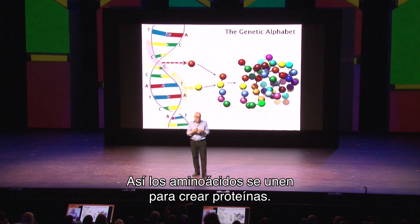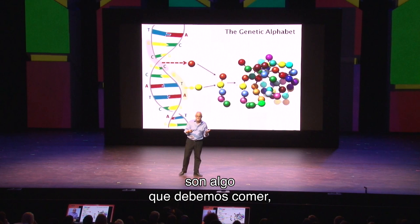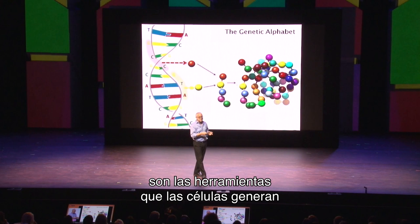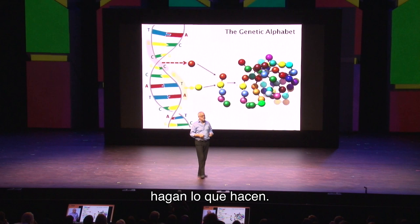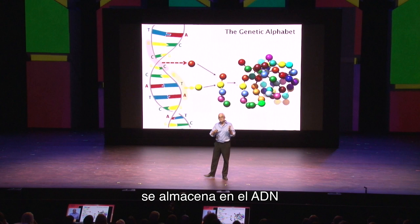In that way, those amino acids can be strung together to make proteins. We often think of proteins as just something that you need to eat. But what you're actually eating are the tools of what those cells made in order for those cells to do what they do. You're going to break those proteins down into constituent amino acids, and you're going to build your own proteins so your cells can do what they do. Proteins lie at the heart of everything — this is how information is stored in DNA and then transferred into proteins.